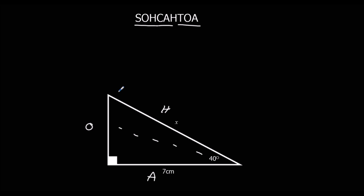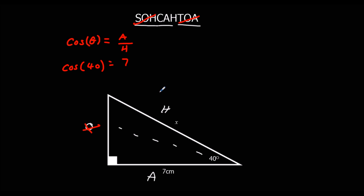In this question, H is with X, A is with 7, and O is by himself, so we're not using O. We're using CAH. Cos of the angle equals adjacent over hypotenuse. Substituting in: the angle is 40°, adjacent is 7, and hypotenuse is X. We have 7 over X. Times both sides by X to get X × cos 40 = 7, then divide by cos 40, giving X = 7 ÷ cos 40.